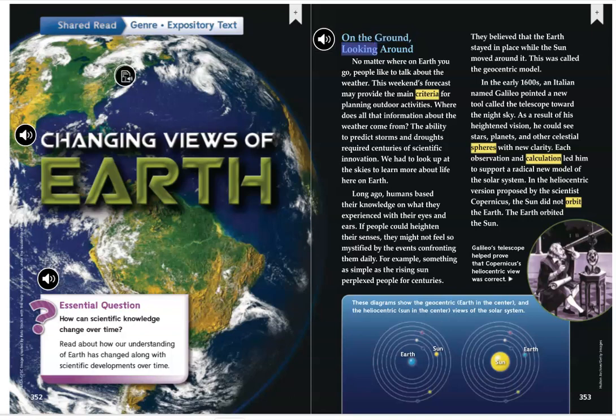On the Ground, Looking Around. No matter where on Earth you go, people like to talk about the weather. This weekend's forecast may provide the main criteria for planning outdoor activities. Where does all that information about the weather come from? The ability to predict storms and droughts required centuries of scientific innovation. We had to look up at the skies to learn more about life here on Earth.